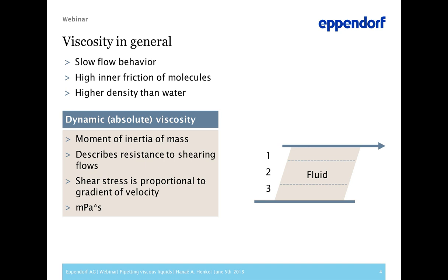Viscous liquids generally have a slow flow behavior, deriving from a high inner friction of molecules. Viscous liquids also have a much higher density than water, and density must be taken into account for measuring viscosity and all pipetting applications. There are two characteristics of viscosity. Dynamic viscosity describes the moving liquid by considering the inertia of mass and resistance to shearing flows — the shear stress is proportional to the gradient of velocity. The more shear stress is applied, the faster the liquid flows. Dynamic viscosity is stated in millipascal seconds and measures a fluid's resistance to flow when an external force is applied.